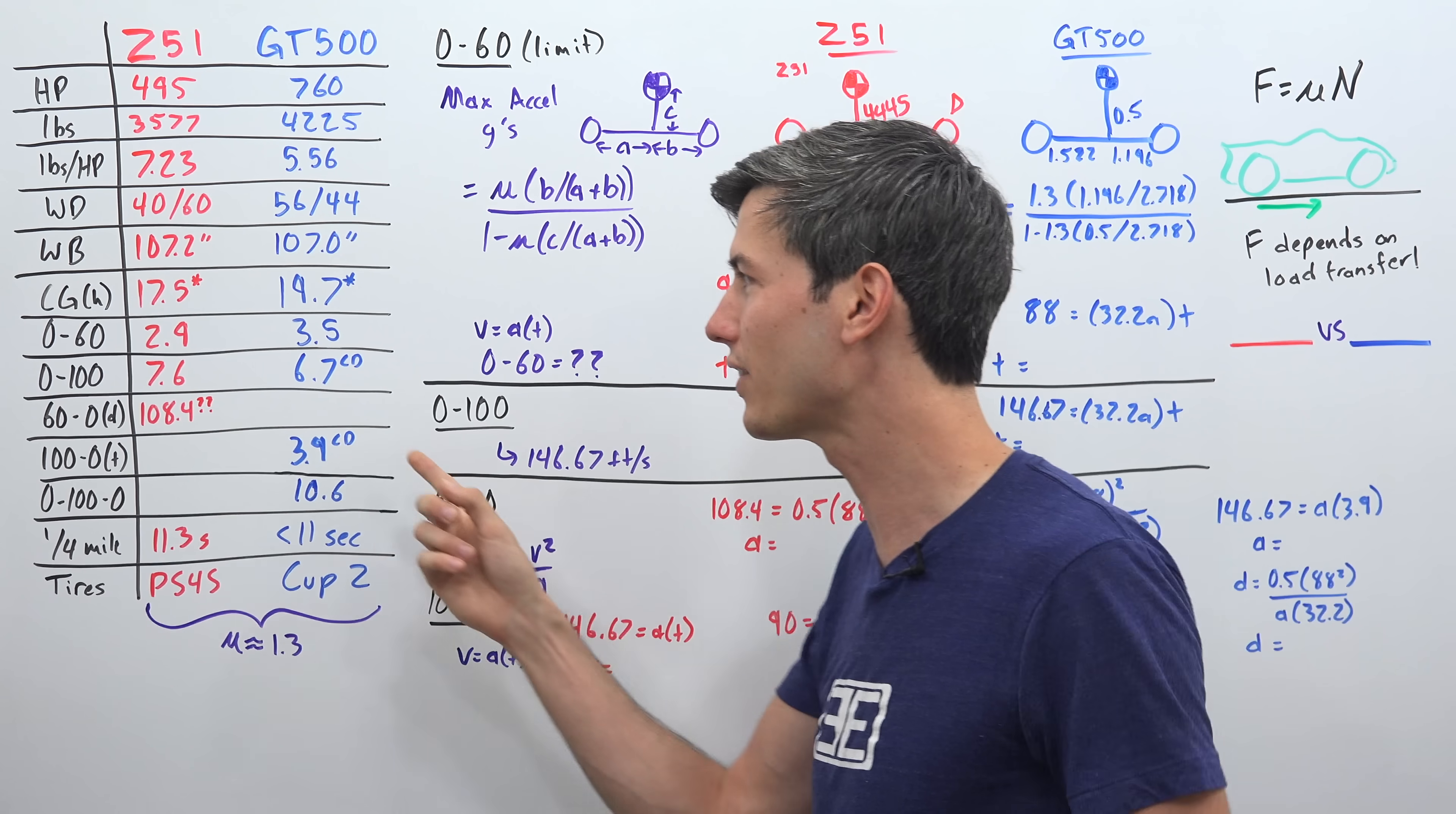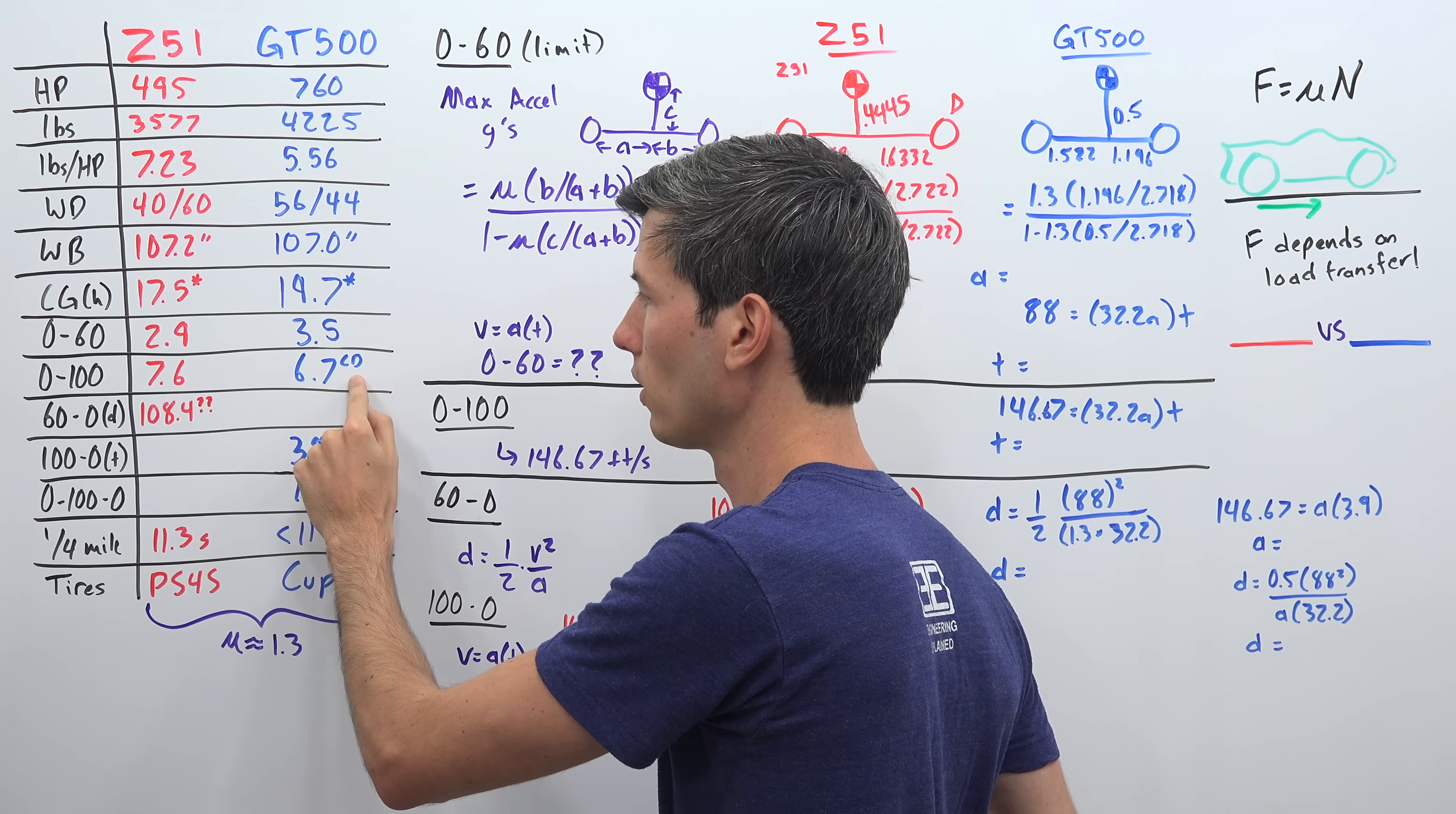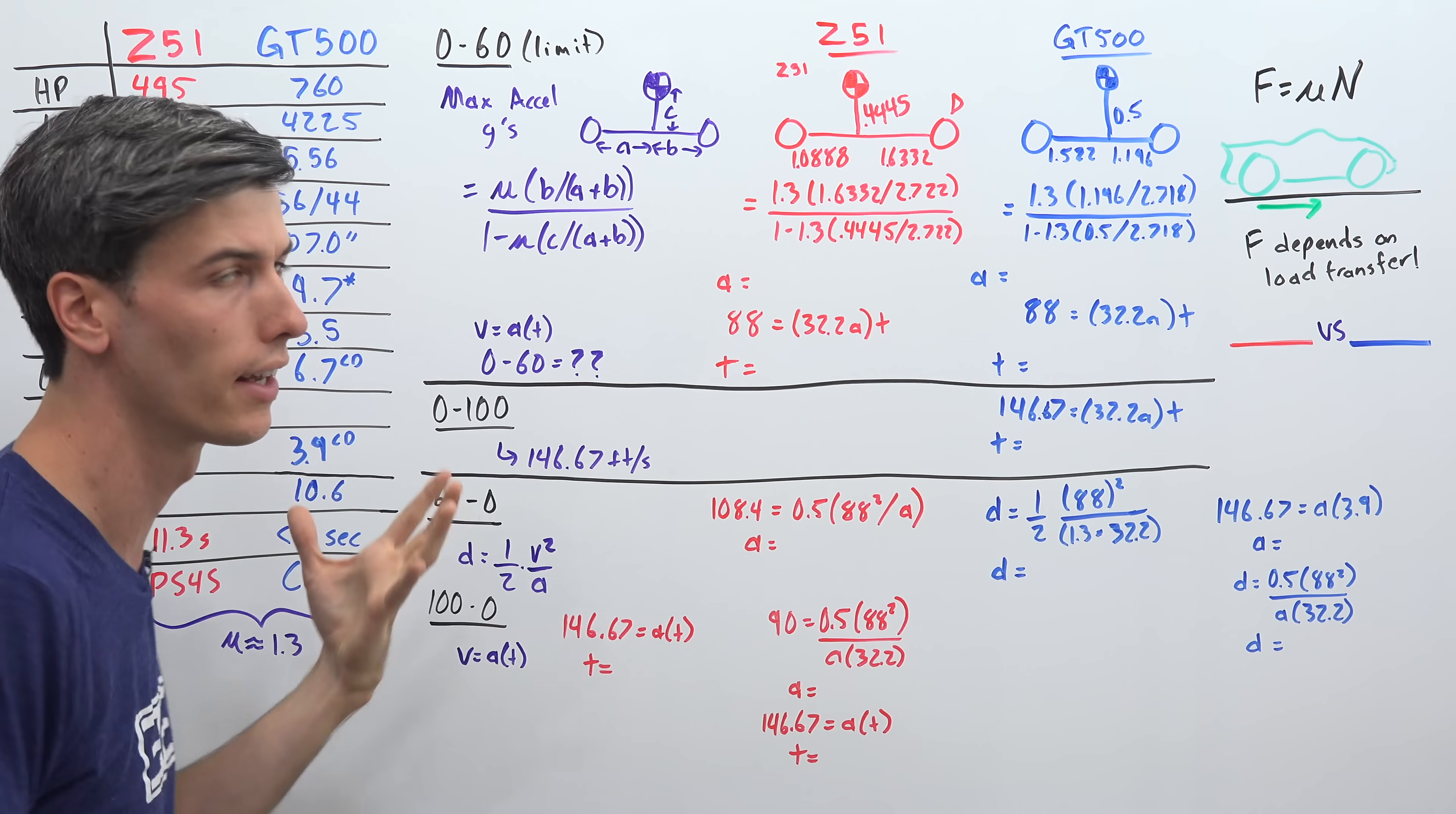And then that 0.6 second difference between the 0-60 times. However, if we look at the 0-100 times, the Corvette is now slower 7.6 seconds to 100 miles per hour versus 6.7 seconds to 100 miles per hour. So what does that tell us? Well, it tells us that the GT500 is going to be traction limited. It's not able to put down all 760 of its horsepower below 60 miles per hour. But then above those speeds, it's actually capable of using them and it's going to have a lower 100 time than the Corvette, which is starting to run out of power here because it's only got 495 versus that 760.